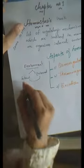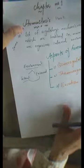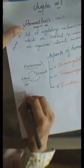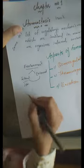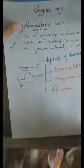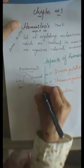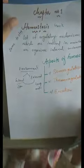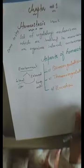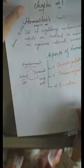Internal environment is our body's environment — such as ions present in the body, blood present in the body, and so many chemicals present in the body. External environment is the environment in our external surroundings, such as temperature, water, and humidity. These all are part of our external environment.